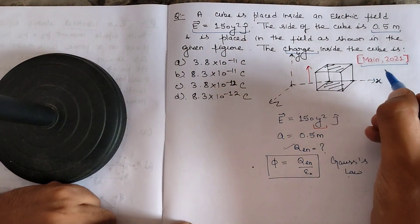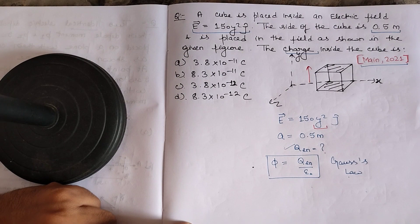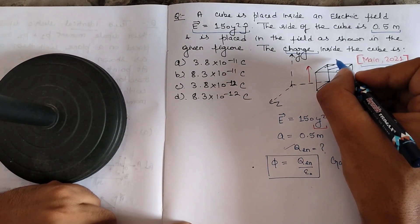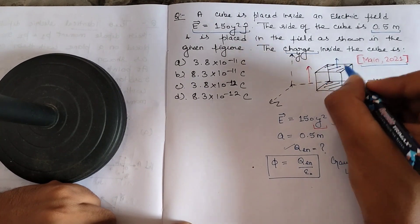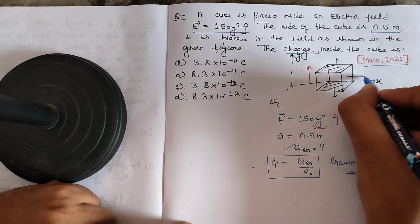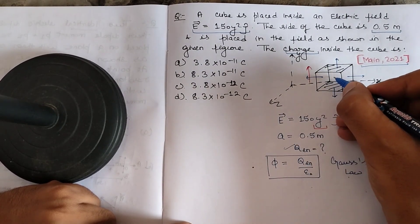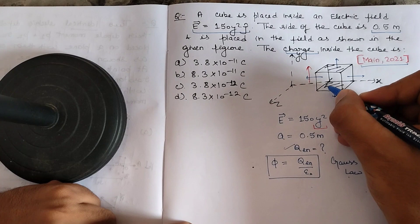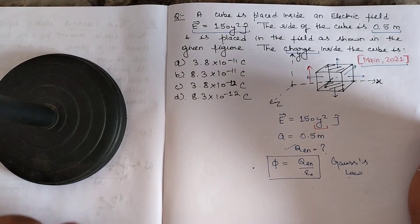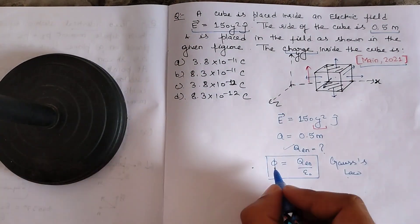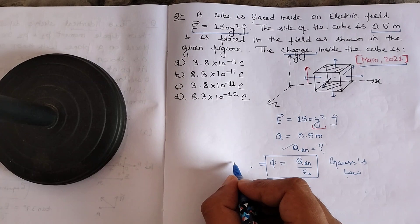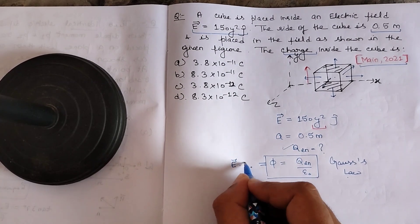By applying Gauss's law we can find the solution to this problem. First, we assign the area vector to all the faces of the cube. The area vector is perpendicular to each face. So the area vector for this face points outward like this, this face like this, this face like this, this face like this, the frontal face comes out like this, and for the back face it goes out like this. Flux is given as the dot product of the electric field and the area vector.